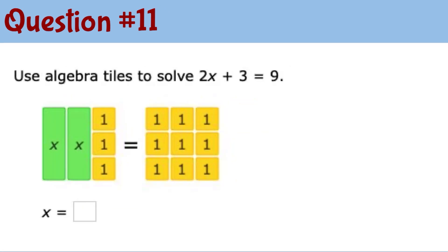In question number 11, I can take out 3 unit tiles from each side — taking out pairs one at a time. After removing the matching tiles, we have 6 remaining unit tiles on the right that need to be split up between the 2 x tiles. So each x tile value equals 3.